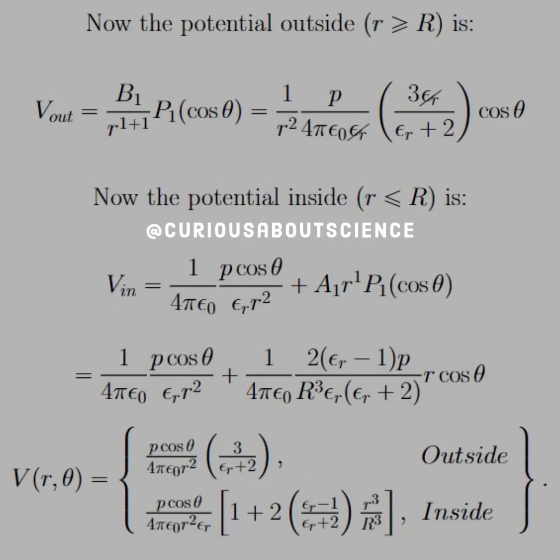Now we just have to put all this together. Now that we know what the coefficients are, we can substitute them into the potential. Again, this is all for the case of L equal 1. So V out is equal to B1 over R1 plus 1, and it's the first Lagrange polynomial, which is just cosine. Substitute in B1, and we see that we get cancellations of the dielectric permittivity, epsilon R.